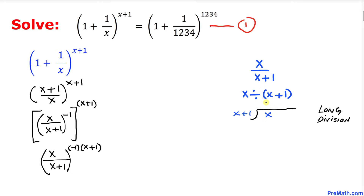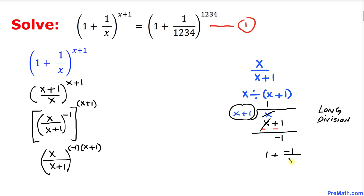We perform the long division: multiply by one to get x plus one, then change the sign — this becomes negative. So positive x and negative x cancel, and we are left with simply negative one. So the whole thing could be written as one plus negative one divided by the divisor x plus one.